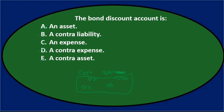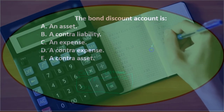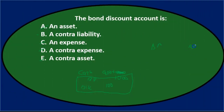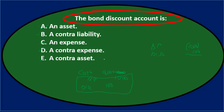The bond discount is a contra liability. The bonds payable sits on the books as a $1,000 credit (liability), and the discount appears as a debit, going the opposite direction. The carrying amount of the bond is the difference between the two. Most liabilities carry credit balances, but the discount carries a debit balance — hence it is contra. Final answer: B, a contra liability.